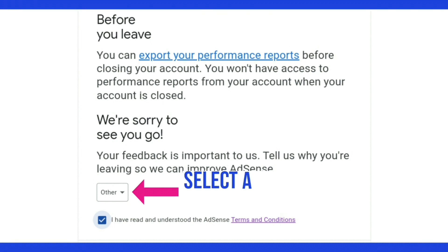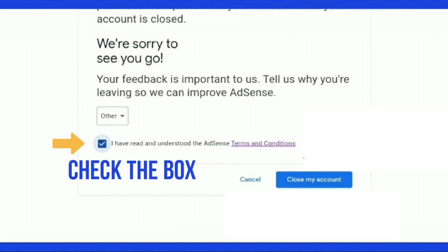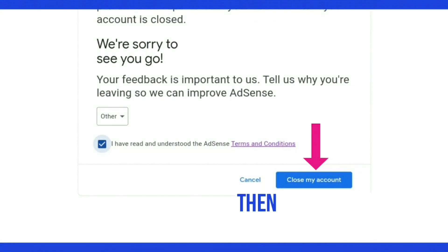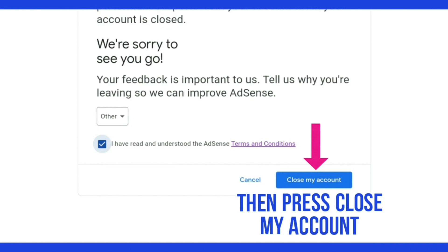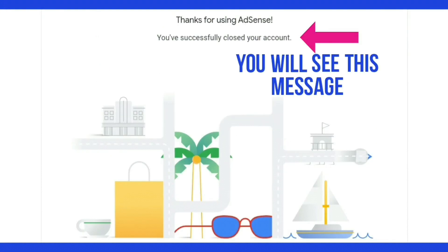Select 'Other' from the drop-down menu, then check the box for 'I have read and understood the AdSense terms and conditions,' and then press 'Close my account.' After that you'll see a message that says 'Thanks for using AdSense — you've successfully closed your account.'